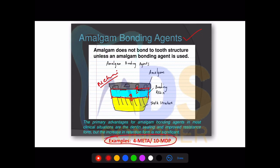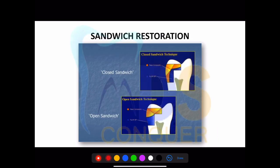Regarding sandwich technique: in the open sandwich technique, the GIC faces outside — GIC is open to the outside. In the closed sandwich technique, the GIC is on the inner side and not exposed; composite is outside and GIC is inside. The open sandwich technique is used when you want fluoride release and remineralization at that particular area.